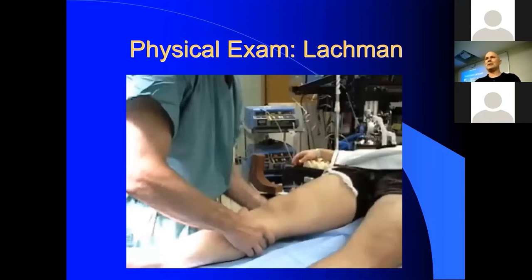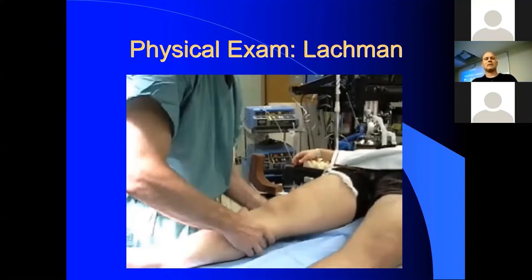The Lachman exam — if you're highly suspicious for an ACL tear, do this test first before the collaterals, because once they start guarding you won't get a good test. Best position: patient supine, flex the knee about 30 degrees, one knee under the back of the thigh with thumb over the top, other hand on the tibia, and shift the tibia straight forward almost toward your nose. You really need the patient to relax. If your hand is on the hamstrings you can feel if they're tightening up. Wait until the hamstrings relax before pulling forward — a tightened hamstring will give you a false-negative test.